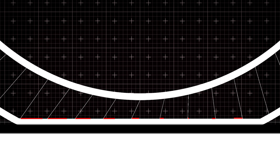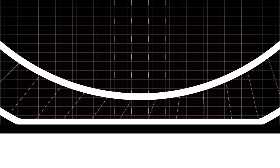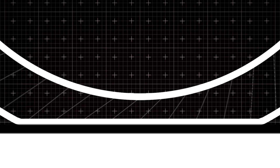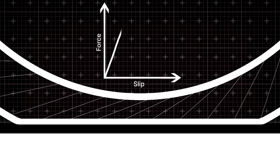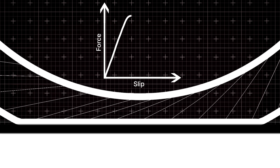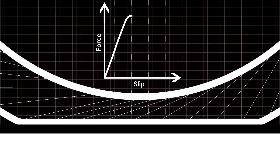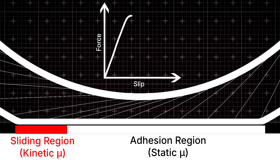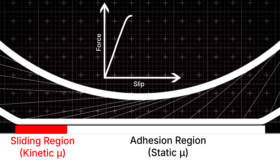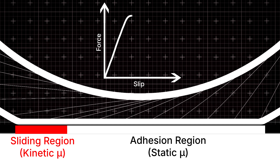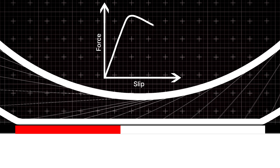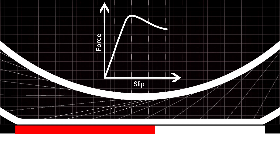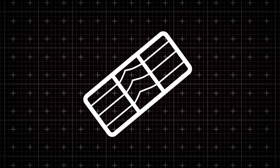As the slip speed increases, the rubber elements deform more and more, increasing the generated force. This relationship remains relatively linear up until a point where the elements are no longer adhering to the surface and are now sliding across it, negatively affecting the peak force the tire can generate. The generated force then falls off asymptotically as the slip speed increases further into the sliding region.